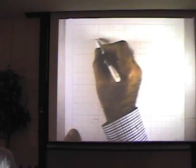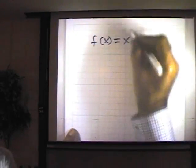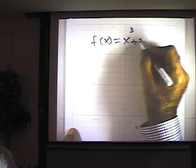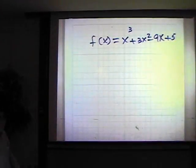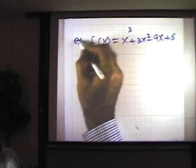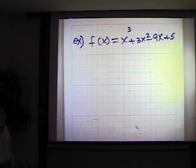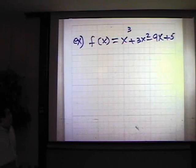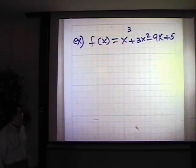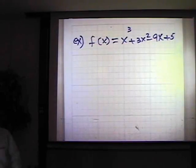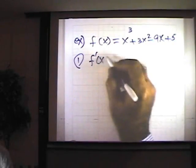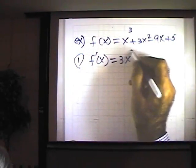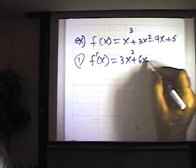The function I have chosen is f of x equals x cubed plus 3x squared minus 9x plus 5. This cubic polynomial is continuous everywhere. Step one: f prime of x equals 3x squared plus 6x minus 9.